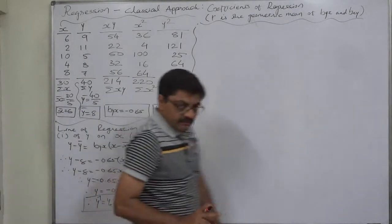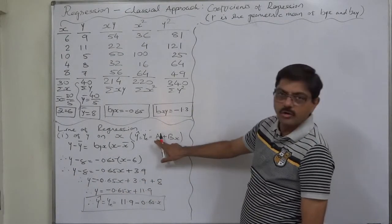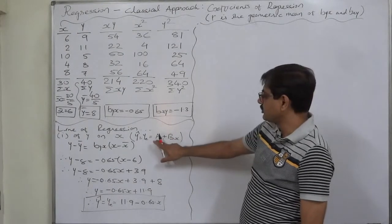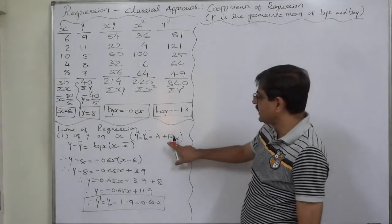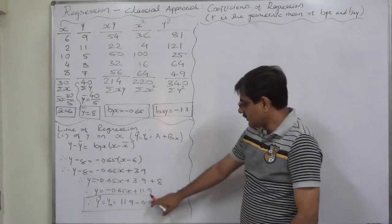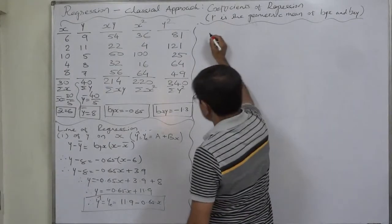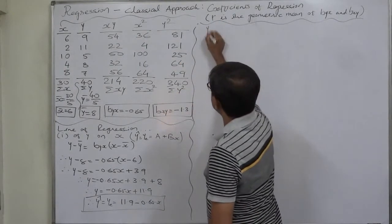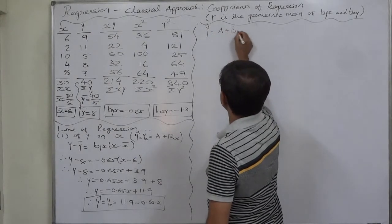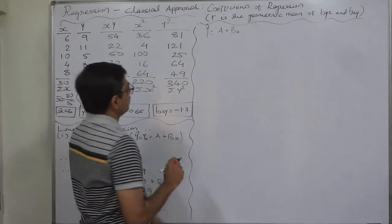Another way of finding the same equation is to first find the value of 'a' separately and then substitute 'a' and b_yx into the standard format to get the same equation. The standard form is y-cap equals a plus bx, where b stands for b_yx.